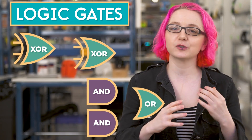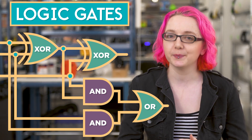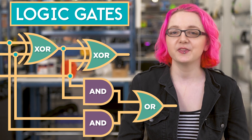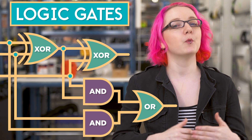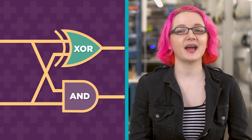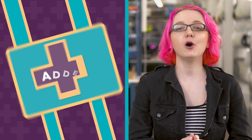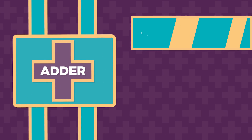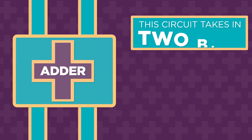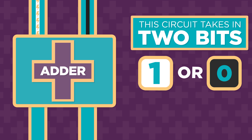By connecting these circuits together, we can make more complex circuits that perform more complex calculations. For example, you can make a circuit that adds two bits together, called an adder. This circuit takes in two individual bits — each one a one or a zero — and adds them together to calculate the sum.